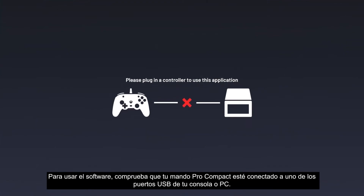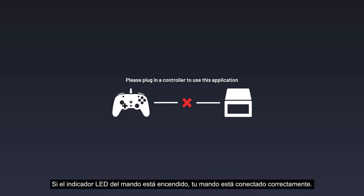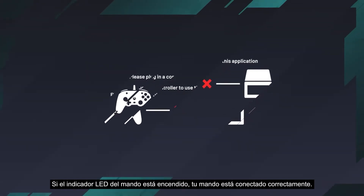To use the software, make sure your Pro Compact controller is connected to one of the USB ports on your console or PC. If the LED indicator on your controller is on, your controller is connected properly.